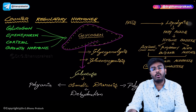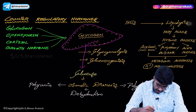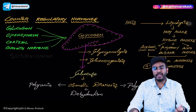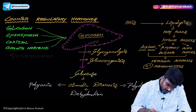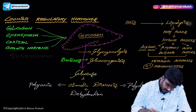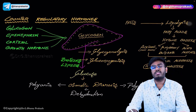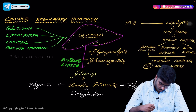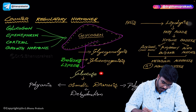Gluconeogenesis is happening — production of glucose from non-carbohydrate sources, such as from proteins and lipids. So from proteins and lipids, glucose is being produced through gluconeogenesis. At the end of the day, glucose is being produced, but can this glucose be utilized by the tissues? No — tissues cannot utilize the glucose.